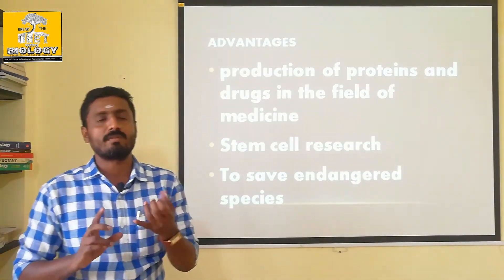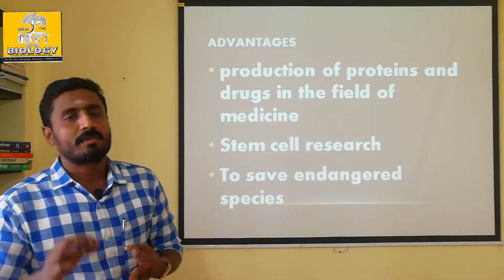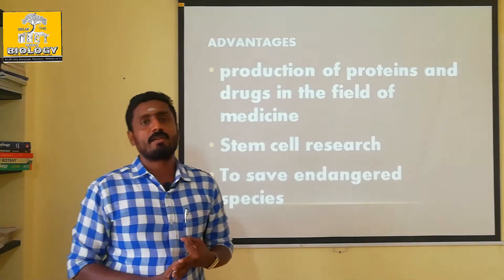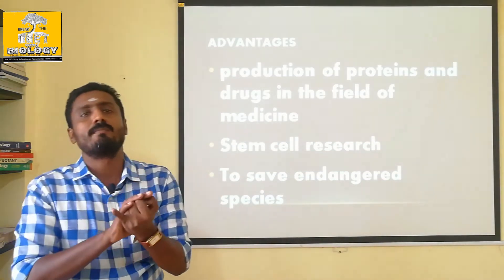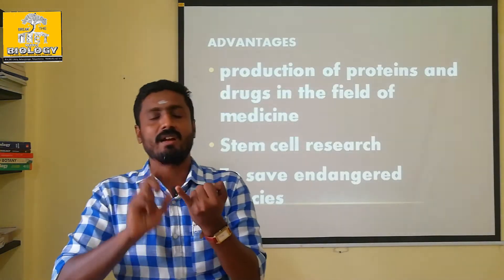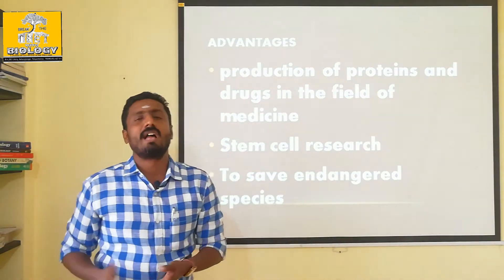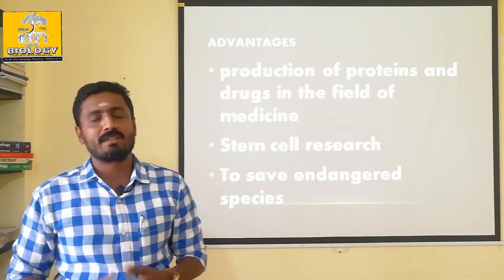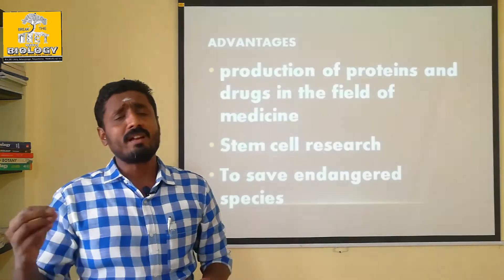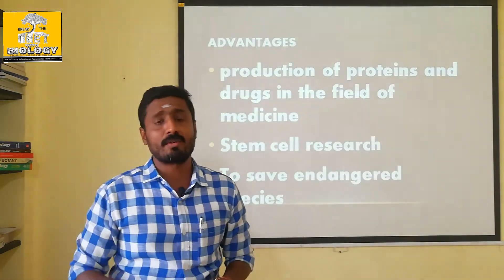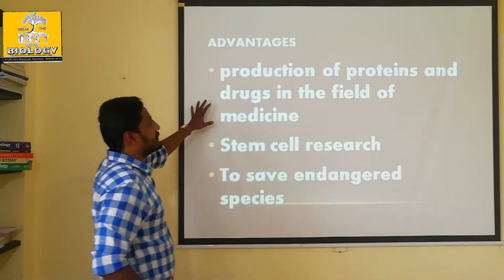There are three types: DNA cloning, reproductive cloning, and therapeutic cloning. Reproductive cloning is also banned. So it is done with DNA cloning. We also use the antibiotics we prepare, and we also prepare proteins including insulin.